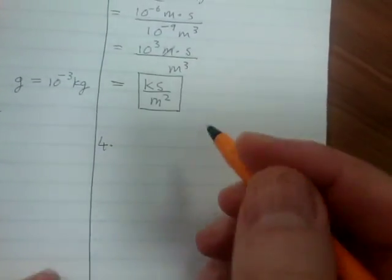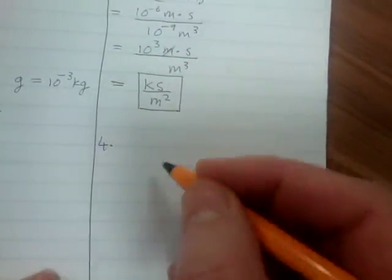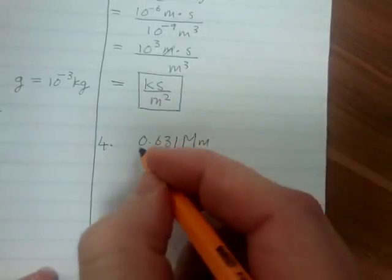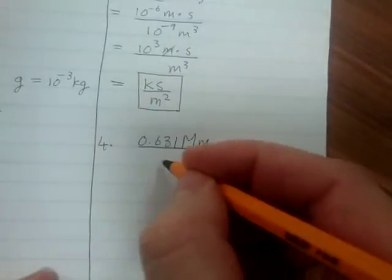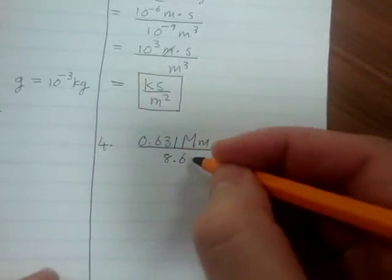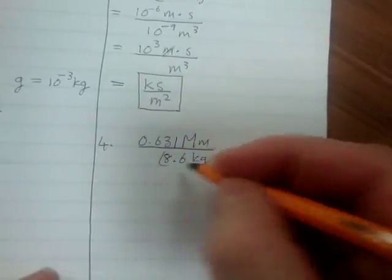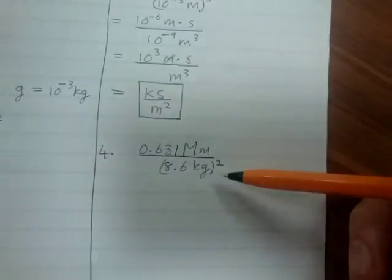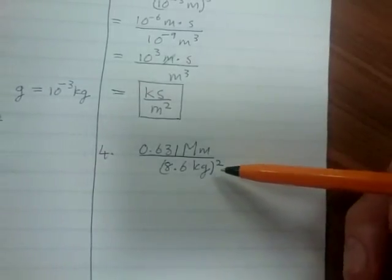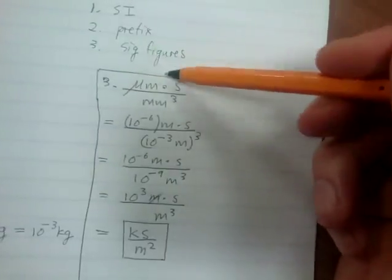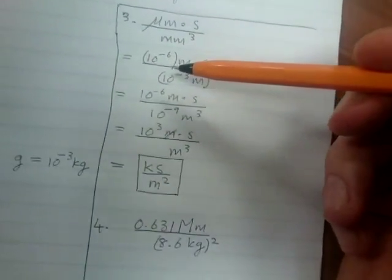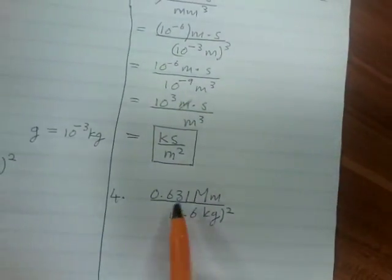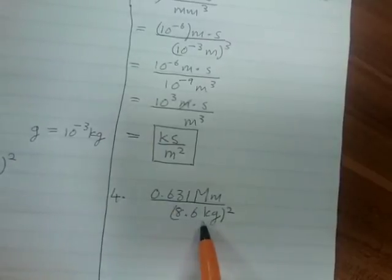The next problem is also in your textbook. It looks like this: 0.631 megameter·meter divided by 8.6 kilograms, all squared. We want SI units with a prefix, and this one asks for three significant figures.